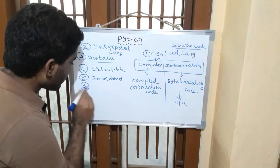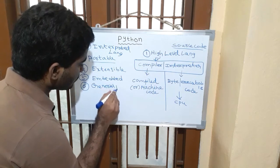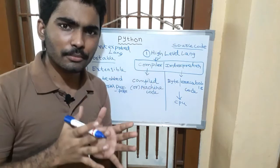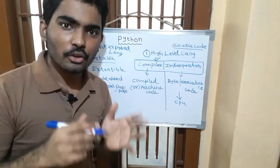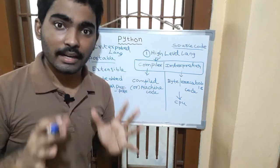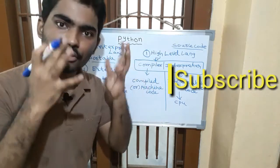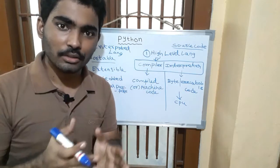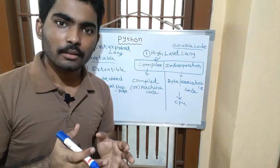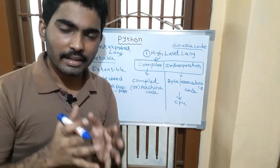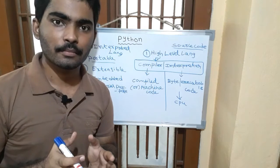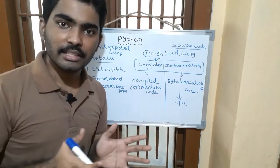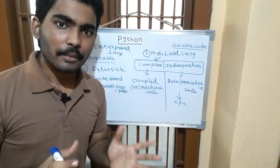The next feature is that Python is a general-purpose language. Python is not developed for any specific domain. You can use Python for web development using Django and Flask, you can create web apps using Flask, CherryPy, and Web2Py, you can do automation, and you can do machine learning and deep learning. Python is a general-purpose language.